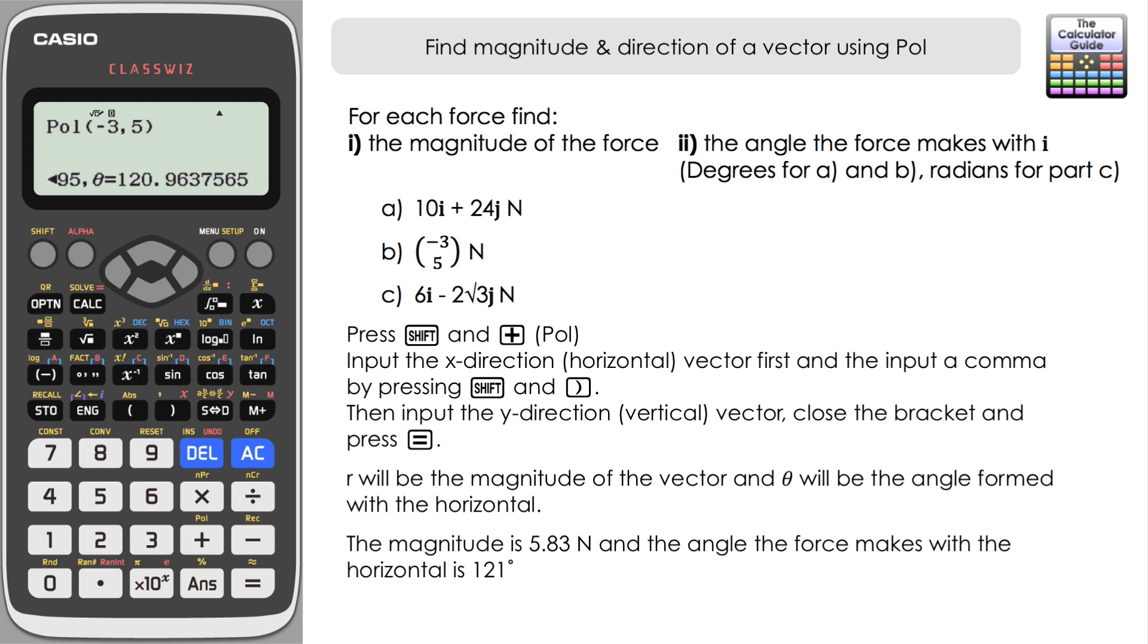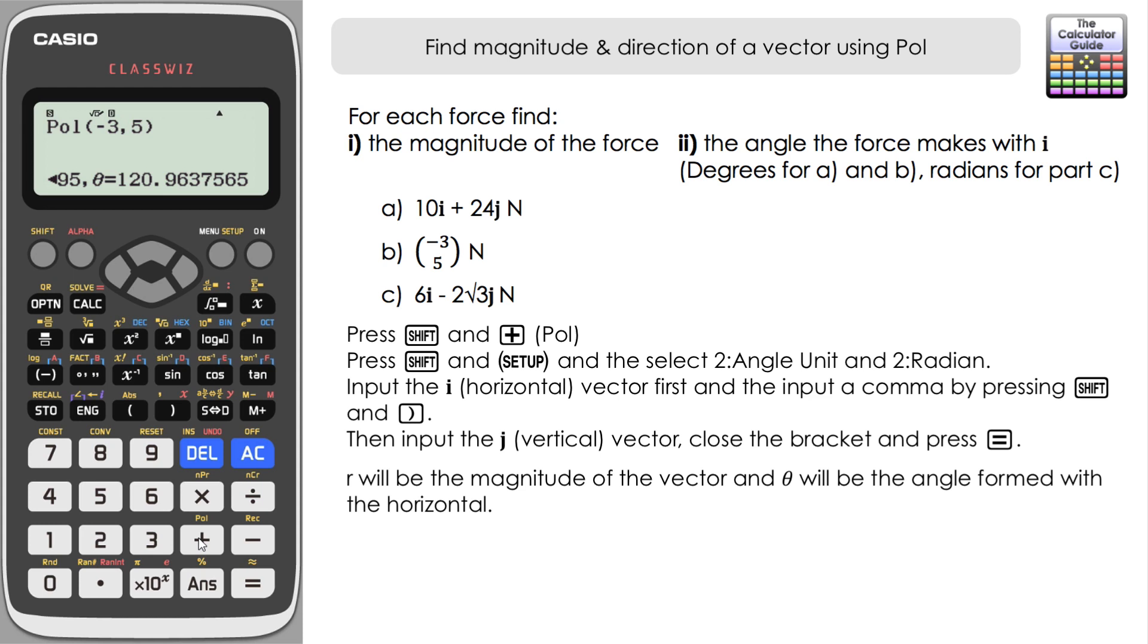Let's move on to the third one that we have here. So it's shift and pole to activate the pole feature. Now one thing that we must change with this one because we want our answer to be in radians, we need to change the angle unit of our calculator. So it's shift and set up, two for angle unit and two for radian. We see it's changed to a little r at the top there. Let's input our i and j vectors so it's six and then comma and then negative two minus two root three for our j vector, close the brackets.